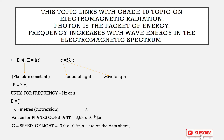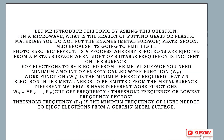Let me introduce this topic with a question: in a microwave at home, why do you put a glass or plastic material inside? You do not put an enamel plate, enamel spoon, or enamel mug because they are made of metal surfaces that would emit light. At home you must be aware not to put a metal surface in the microwave, because you are causing a photoelectric effect — it will emit electrons.